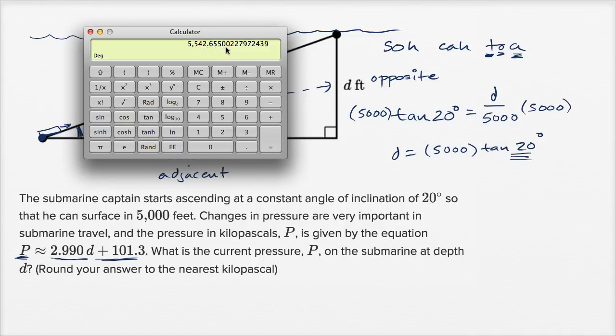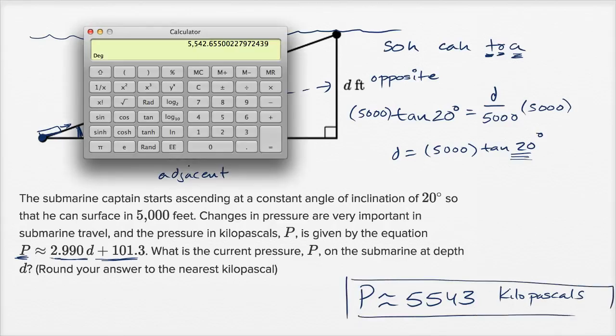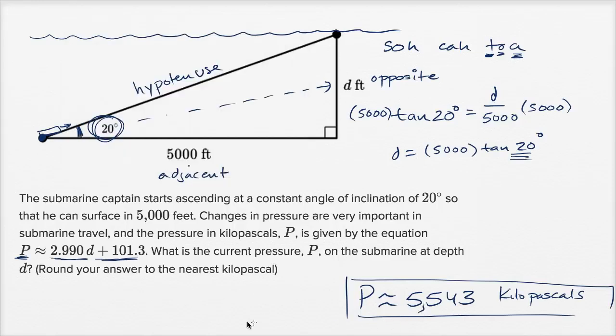I want to round to the nearest kilopascal. This P here is given in kilopascals. So it's going to be 5,540—I'm going to round up because I have a .6 here—5,543. So P is approximately 5,543 kilopascals based on the information that they gave us. Put a comma there, not a decimal. There you go.